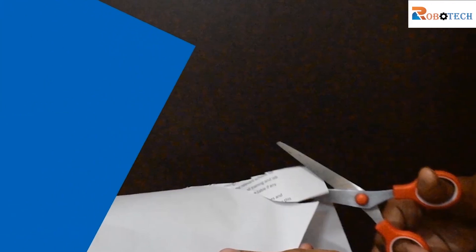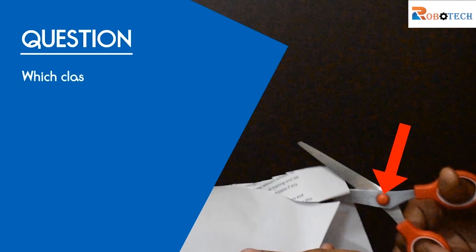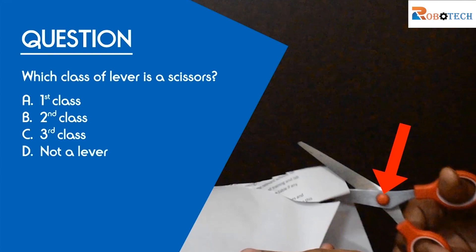Let us answer the following question based on the video: Which class of lever is a scissors? A: first class, B: second class, C: third class, or D: not a lever.